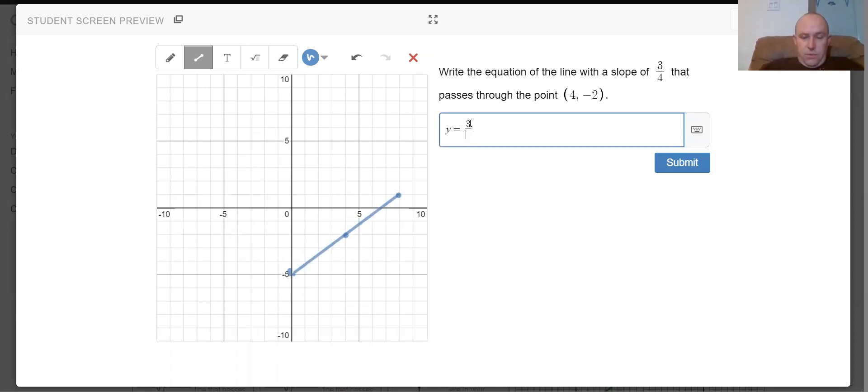So my answer for this one would be three quarters x minus five. We've got a little check in there. There we go. We can see that that goes through that point just fine.